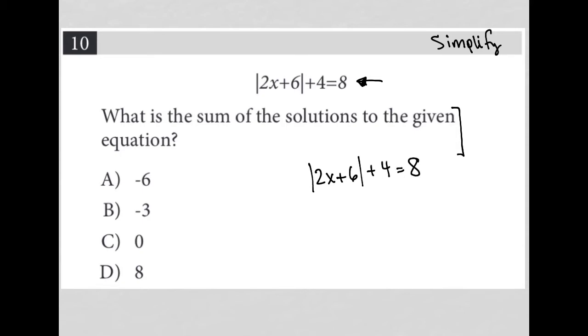And I just try to simplify it. So this equation, I'd simplify by first subtracting 4 from both sides here so that I isolate my absolute value. So absolute value of 2x plus 6 is equal to 4.